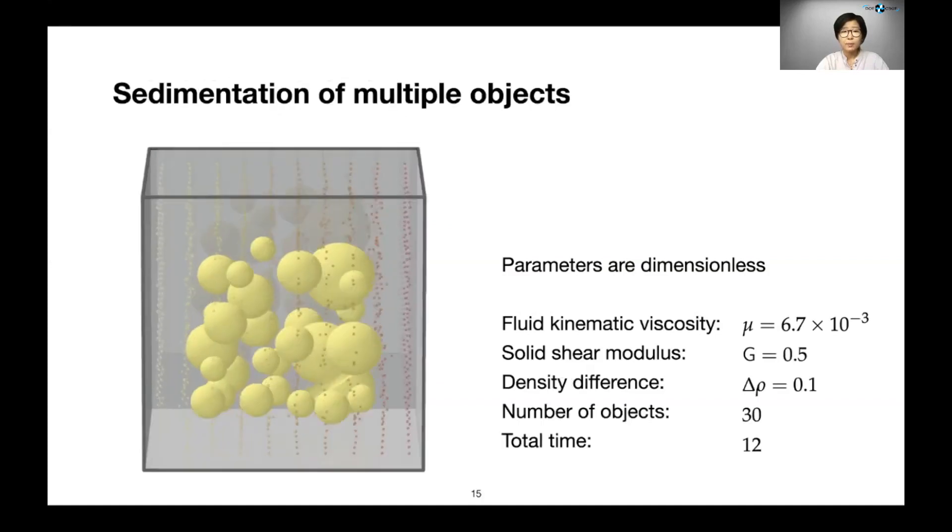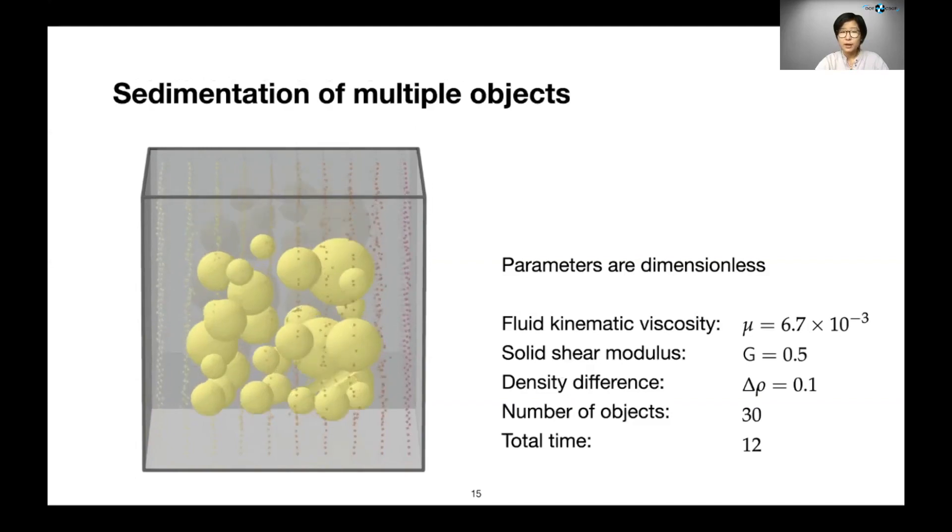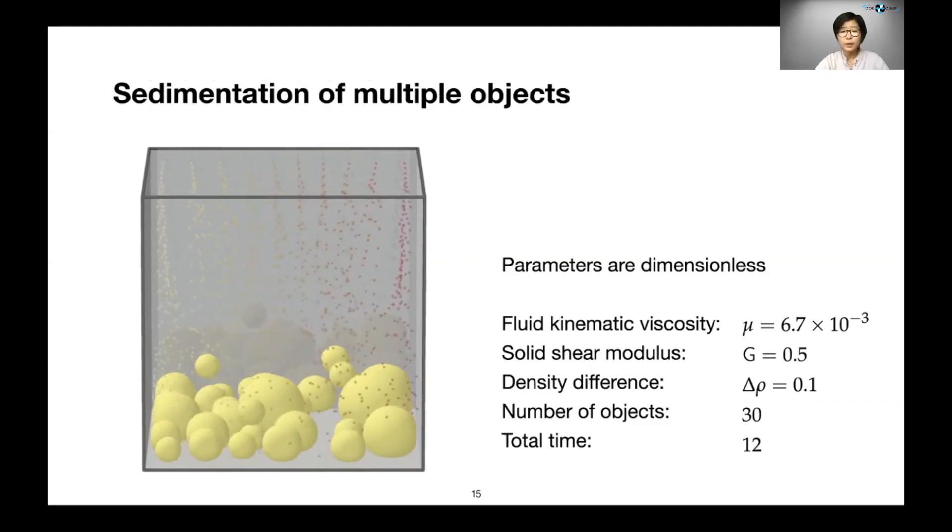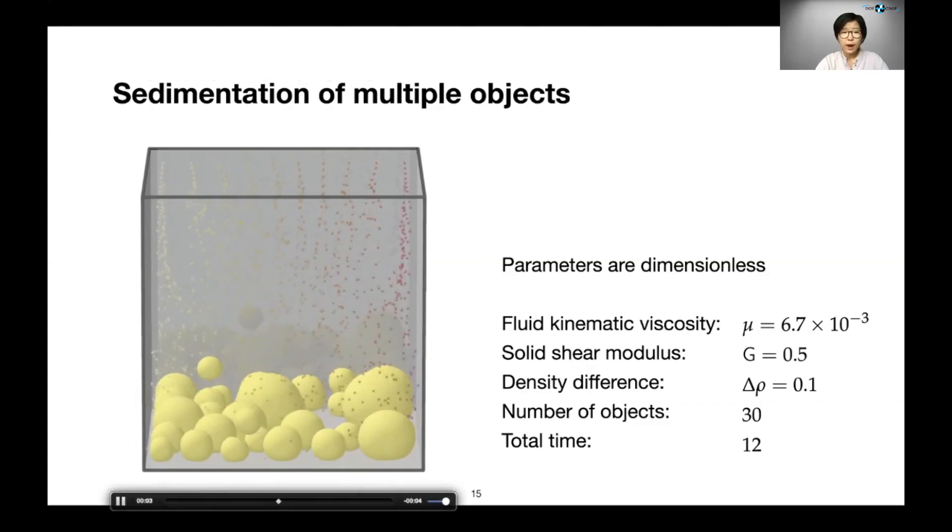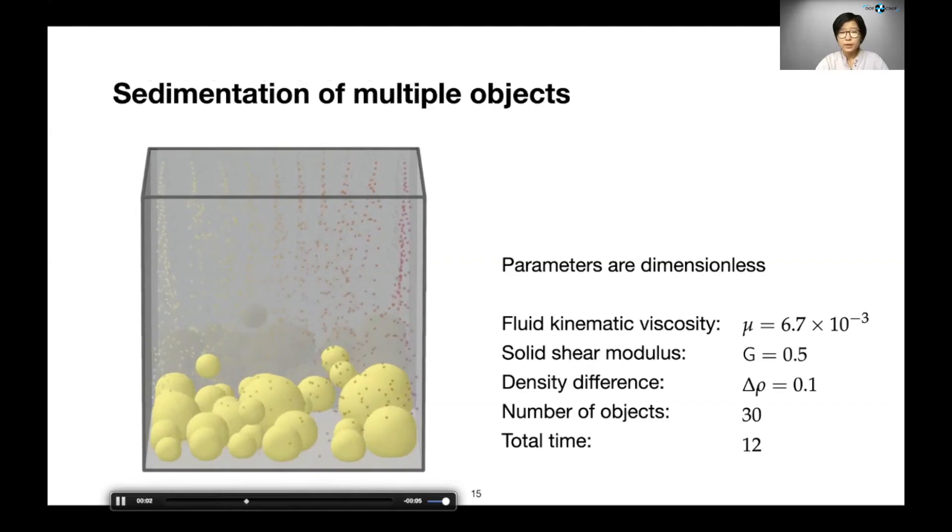Next is another example of sedimentation. We have seen similar examples before, but here, I simulate a few more objects. So here, we have 30 spheres of various sizes. They're quite soft. If you follow one of the big spheres on the right, you will see that it falls down and bounces off its neighbor. It deforms quite a lot and rotates and falls off.